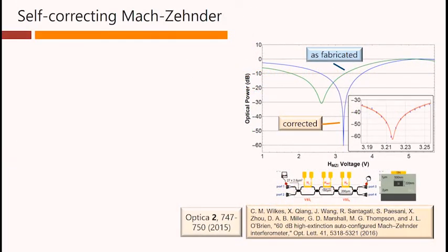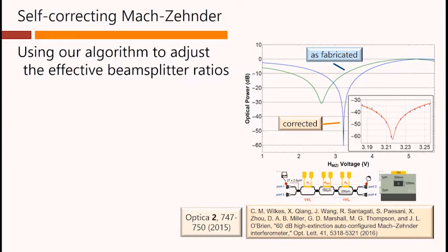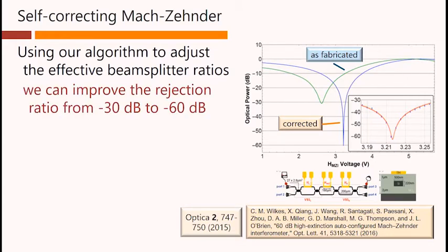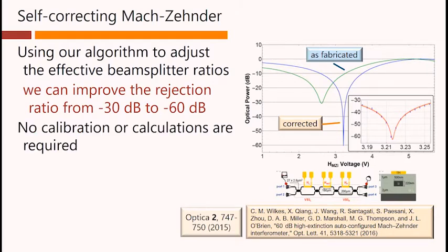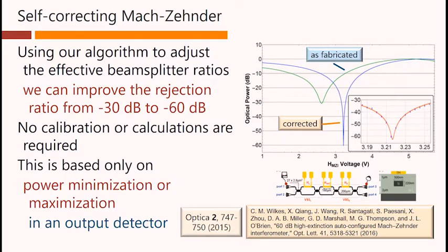With colleagues at the University of Bristol using our algorithm to adjust the effective beam splitter ratios, we can indeed improve the rejection ratio from minus 30 decibels to minus 60 decibels in this Mach-Zehnder system here. So we have one Mach-Zehnder functioning as a beam splitter, another Mach-Zehnder functioning as a beam splitter, and we can correct for the fact that the fabricated split ratios in these various couplers here are not actually 50-50. No calibration or calculations are required for this, and this is based only on power minimization or maximization in an output detector.